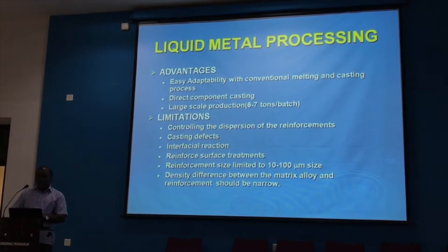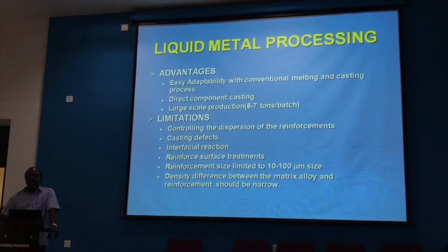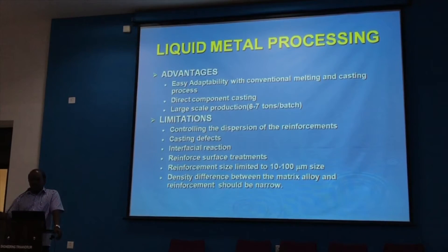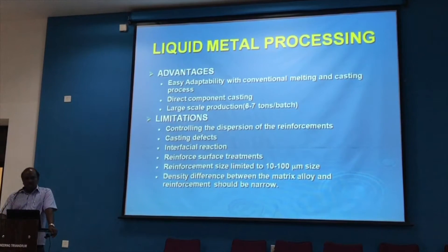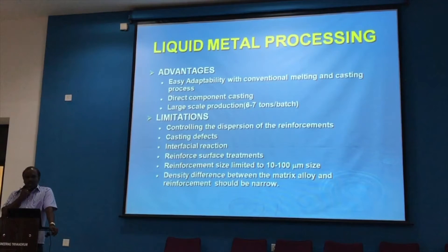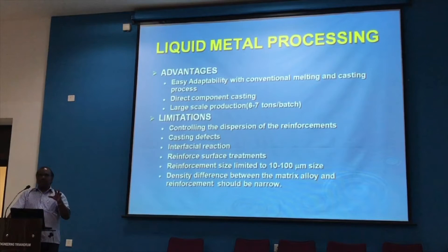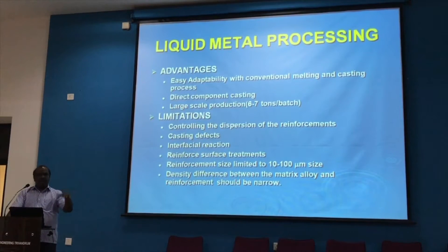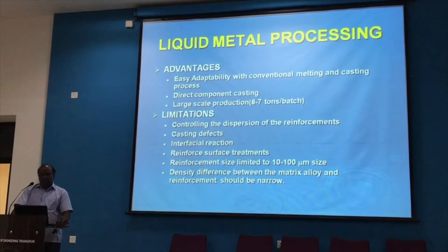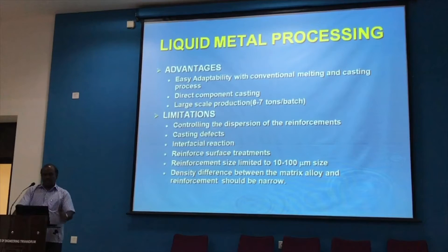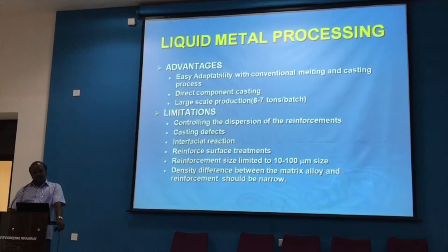The process has several advantages. It can be easily adapted since all you need is a furnace and a stirring setup, and dispersion is relatively easy to achieve. It has easy adaptability with existing melting and casting processes, and direct component casting can be made — you can melt the metal, add particles, and directly cast into a mold. It is a batch process, capable of batches of 6 to 7 tons depending on furnace capacity.